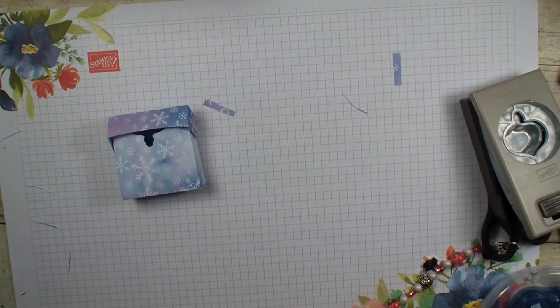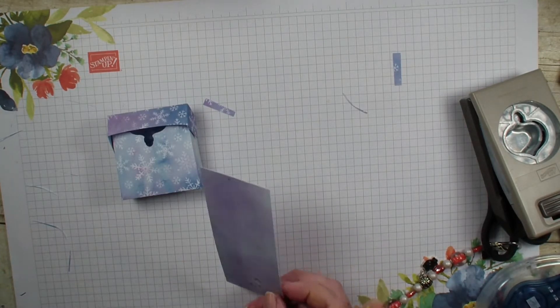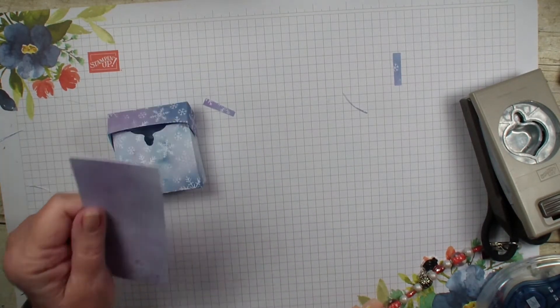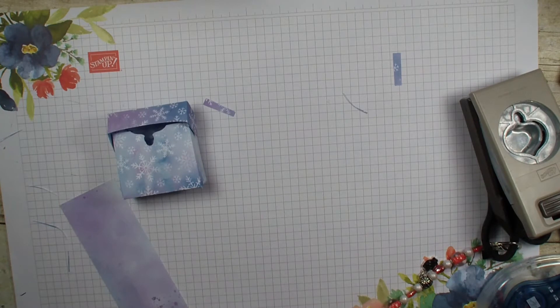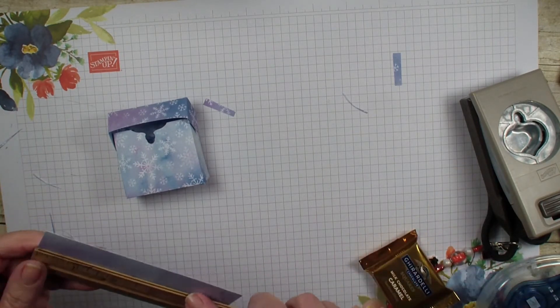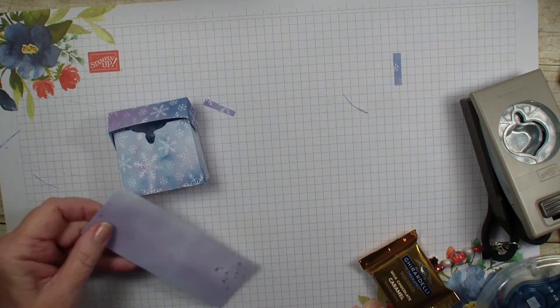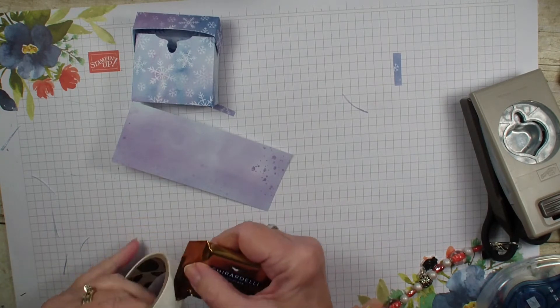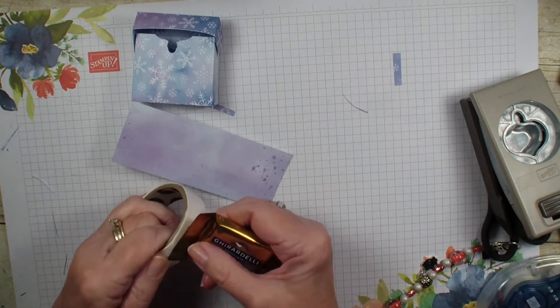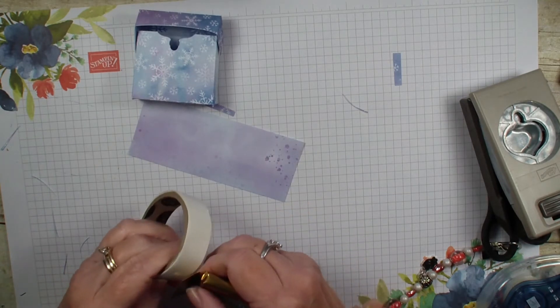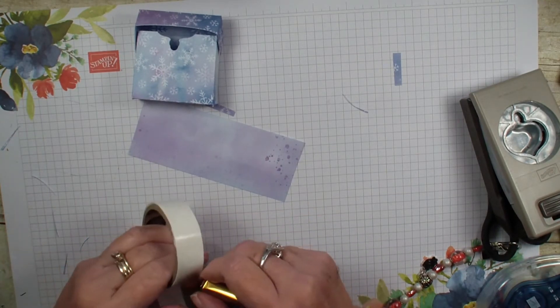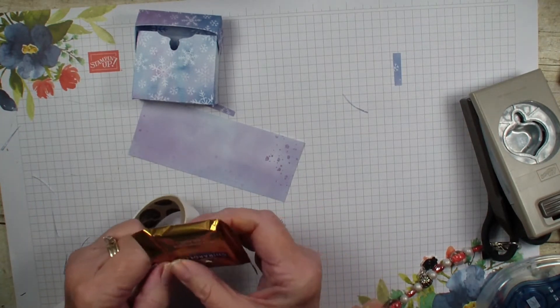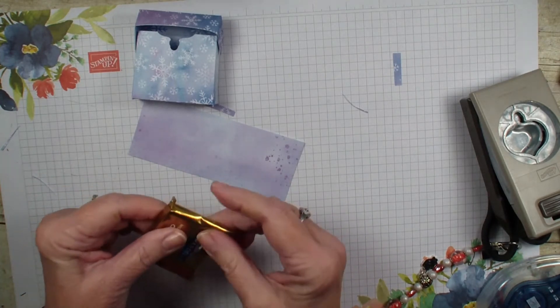What I have next is another piece of that Snowflake Splendor Designer Series Paper. I think this is 2 inches by 5. We are going to bring in our Ghirardelli Chocolate. I am going to take my glue dot and just glue down the side flaps of that chocolate.